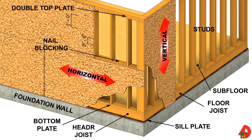Exterior wall sheathing are the panels fastened to the outside of the exterior wall around the perimeter of the building. Oriented strand board (OSB) is commonly used as wall sheathing for residential and light frame structures, but plywood may also be used. Structural panel sheathing adds enough lateral shear strength to wood-framed walls to eliminate the need for diagonal braces. Siding, shingles, stucco, or brick veneer is placed over the sheathing to finish the wall.